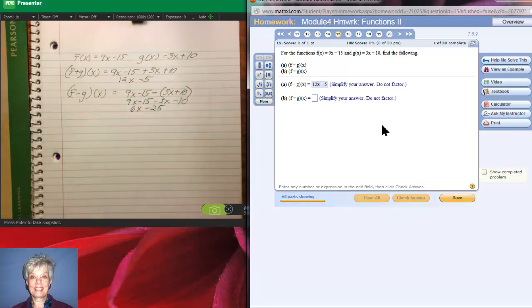Negative times 3x is negative 3x. Negative times positive 10 is negative 10. Now I add my like terms together. 9x minus 3x is 6x. And negative 15 minus 10 is negative 25. Remember, you can slow down this tape. You can pause it. It's not a tape, is it? It's a digital recording. That's what people my age do. We call them tapes. What did I do wrong? 9x minus 3x is 6x. And, oh, 25. Sneaky thing. There we go. Piece of cake.